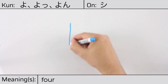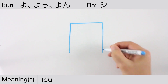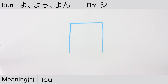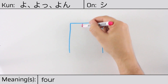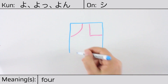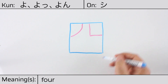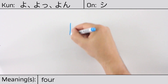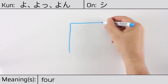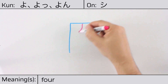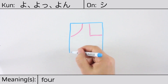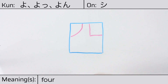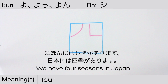This character is made up of the following radicals or parts: the enclosure radical, or territorial boundaries, kunigamae, on the outside, and the human legs radical, hitoashi, on the inside. You can remember this kanji by thinking of it as the mouth on the outside and divide on the inside, meaning dispersal of breath, which one must do to say four. Our example sentence is: Nihon ni wa shiki ga arimasu — We have four seasons in Japan.